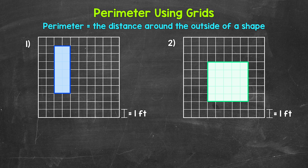In our previous perimeter videos, we used grids and unit squares to count the units around the outside of a shape. Now we're going to take this a step further, and even though we're still using grids, we're not going to count each individual unit, because eventually we're going to find perimeter without using grids.